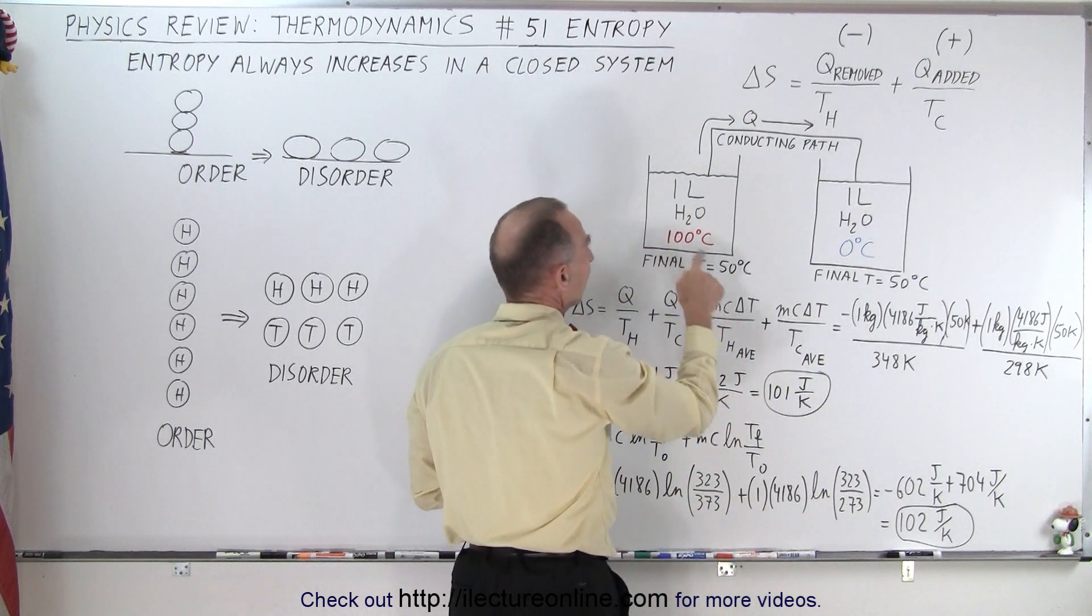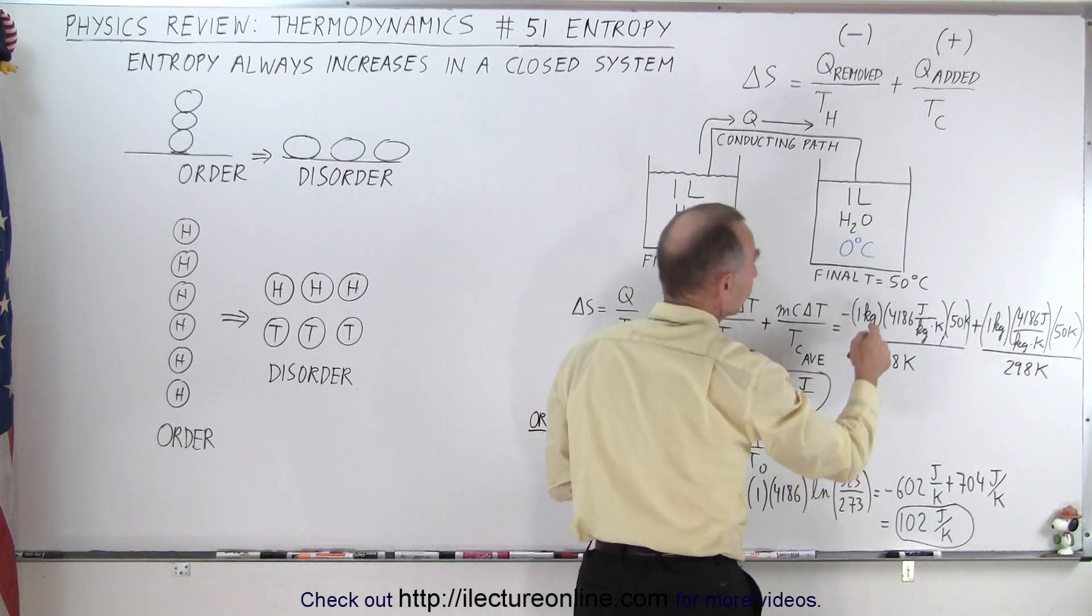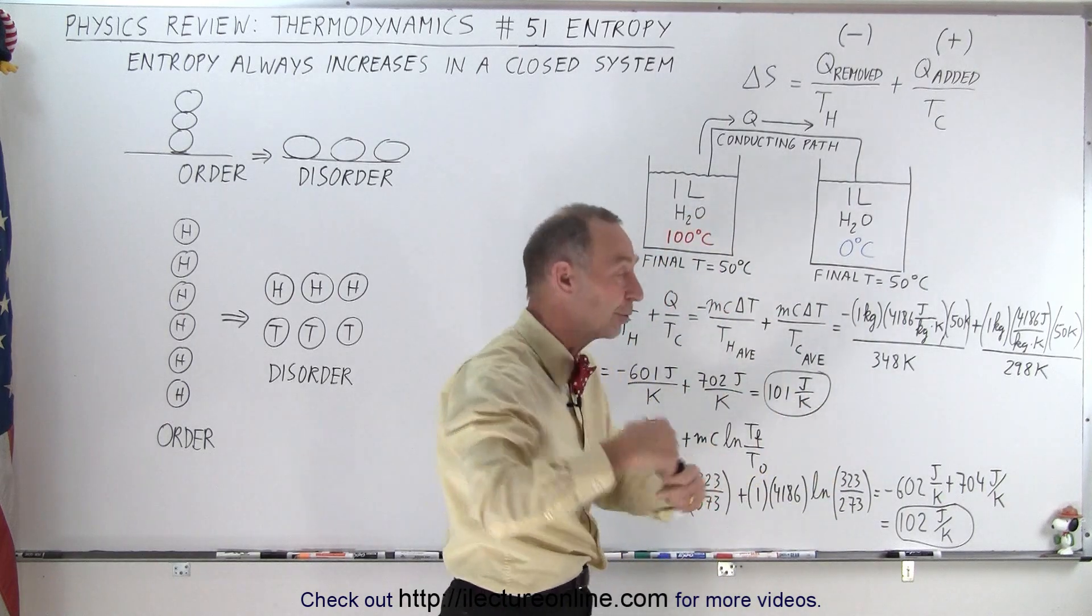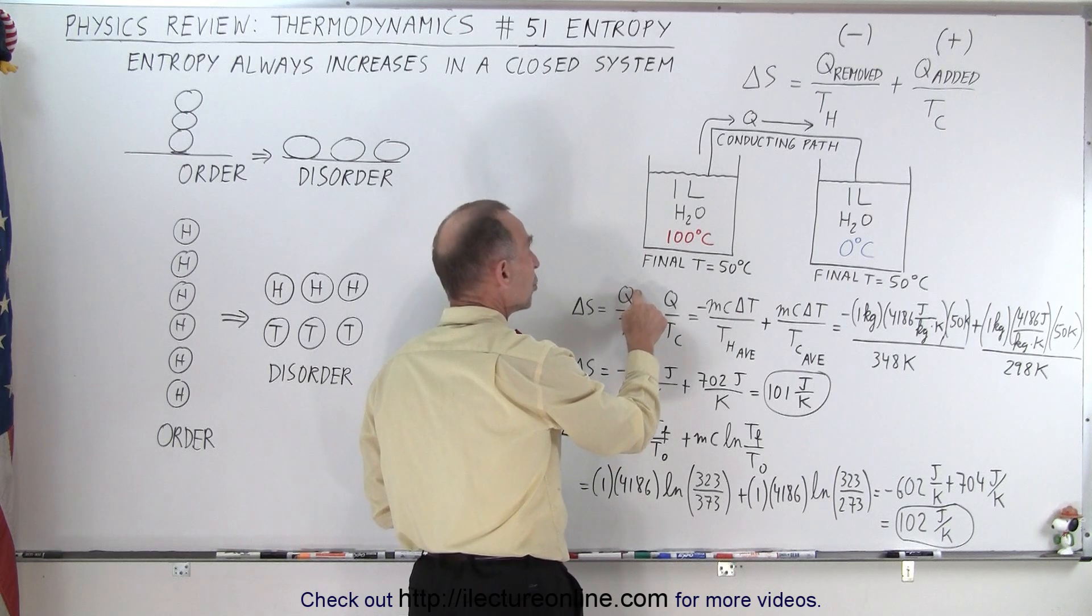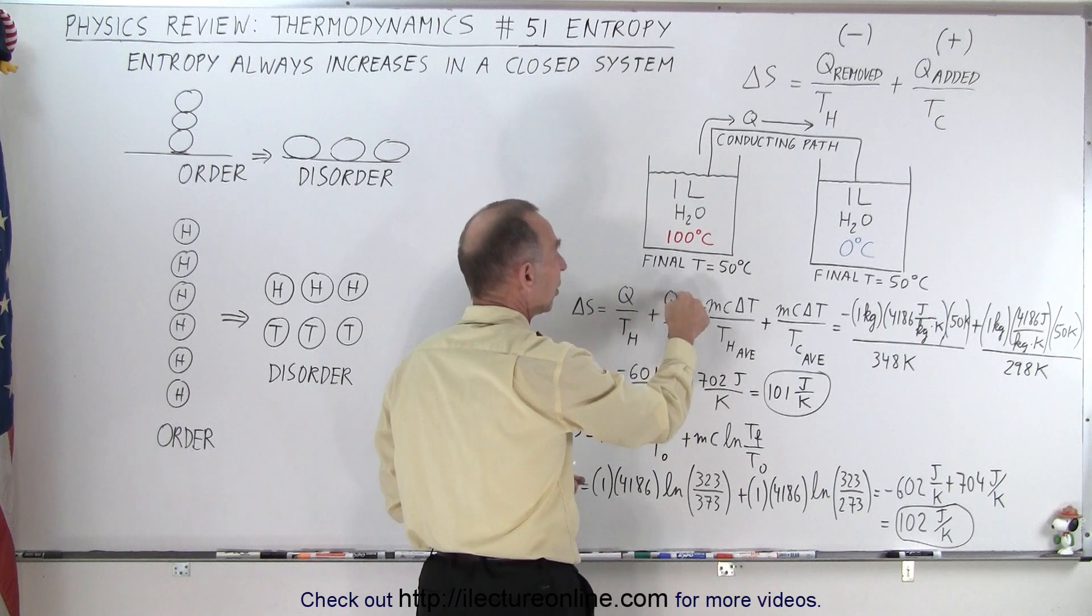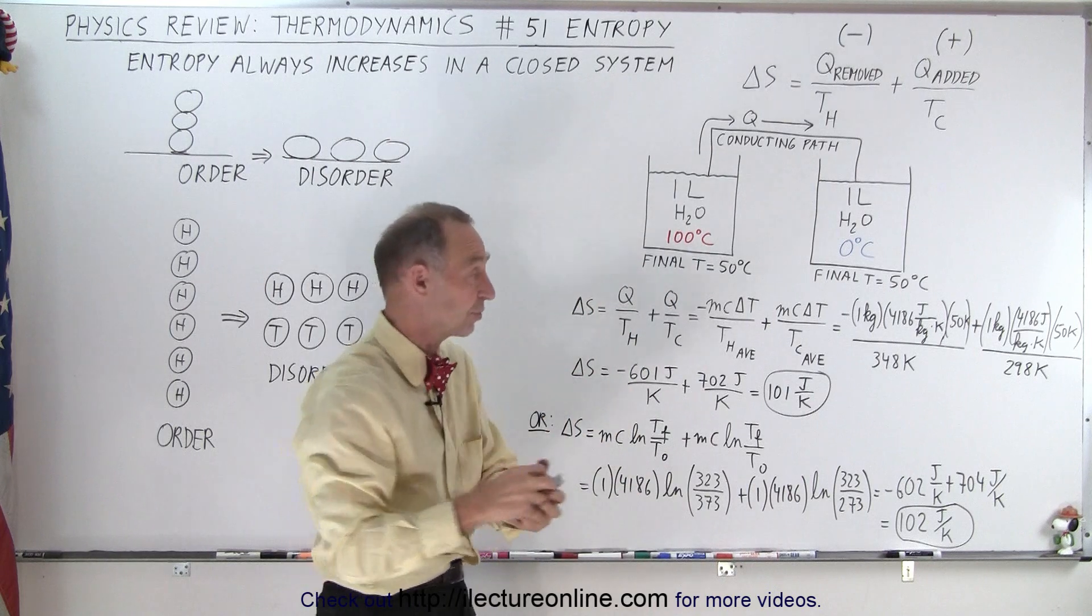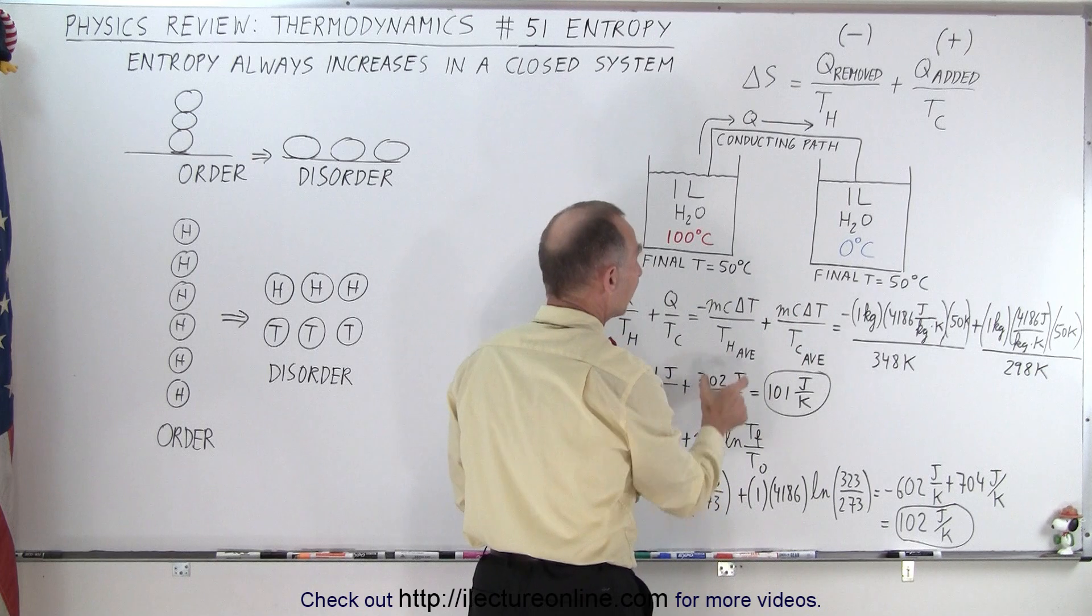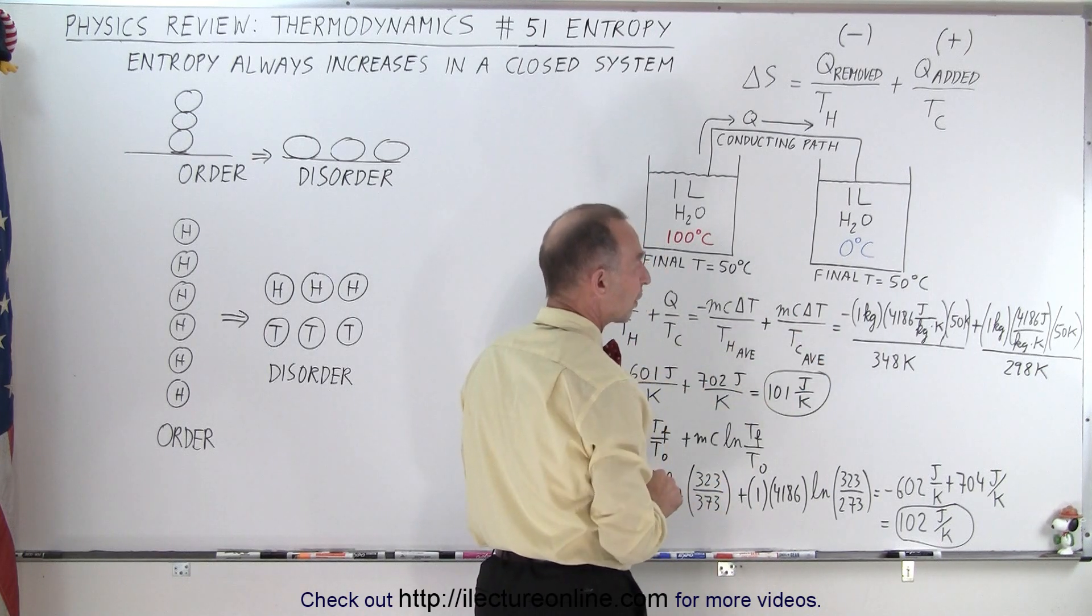If this one started at 100 and went down to 50, the average will be 75, which is a greater average temperature than going from 0 to 50 where the average is 25. That's Celsius degrees converted to Kelvin. So we have the heat removed divided by the hot temperature, the average hot temperature, plus the heat added divided by the average cold temperature. The Q's will be the same because the same amount of heat transferred. So it's MC delta T with a negative and then MC delta T with a positive divided over the average temperature of the hot reservoir divided by the average temperature of the cold reservoir.